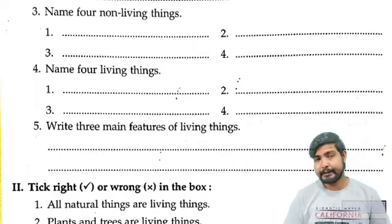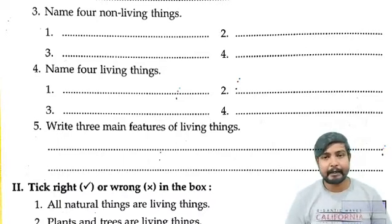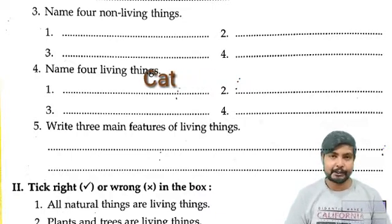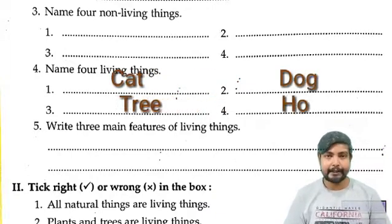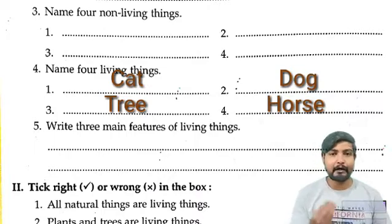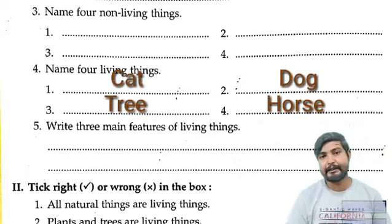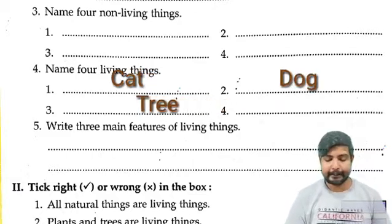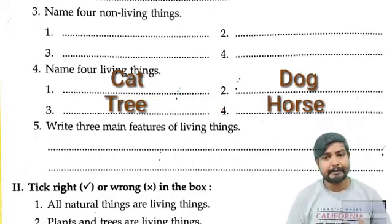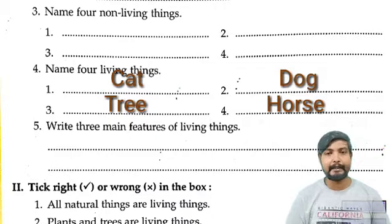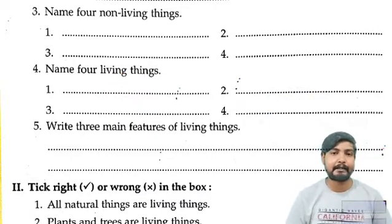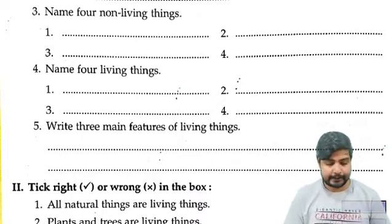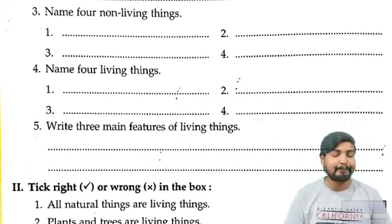Number 4: Name four living things. The answer is: cat, dog, tree, horse. Jis ke andar jaan hai — cat, dog, tree, horse — yeh sab move kar sakte hain, khana kha sakte hain, breathe kar sakte hain, isliye yeh sab living things hain.